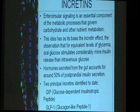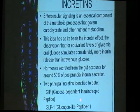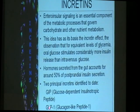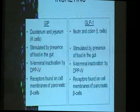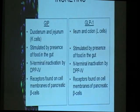The two principal incretins that are identified up to this time are your glucose-dependent insulinotropic peptide, which is quite a mouthful, so we'll just call it GIP. And the second one is glucagon-like peptide 1, or GLP-1. Those are the two main incretins.